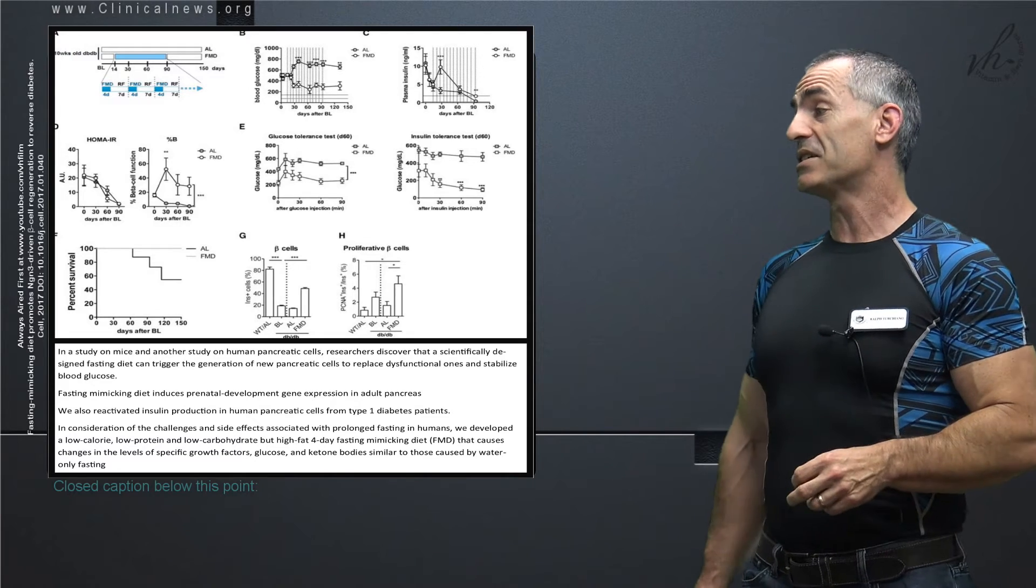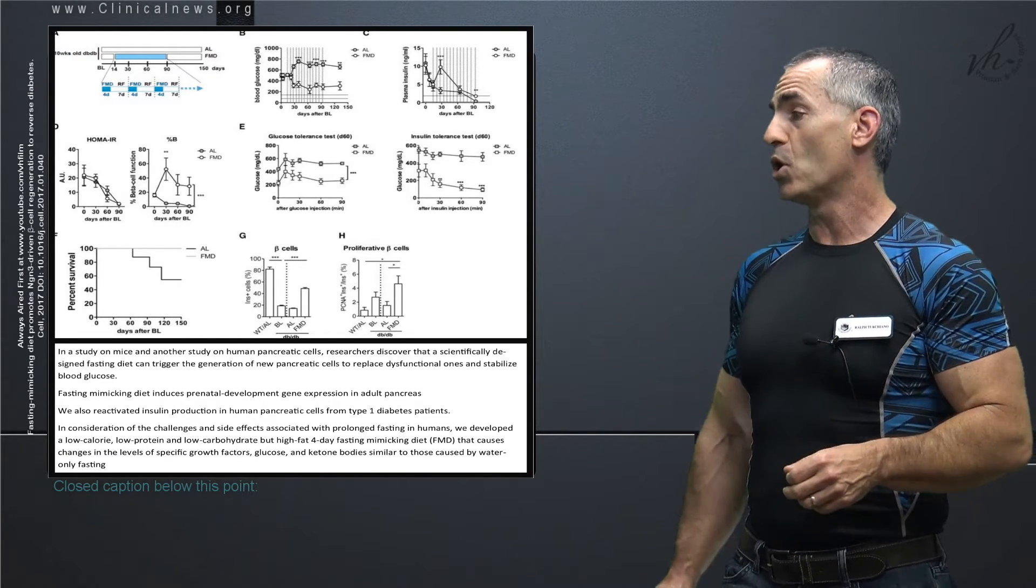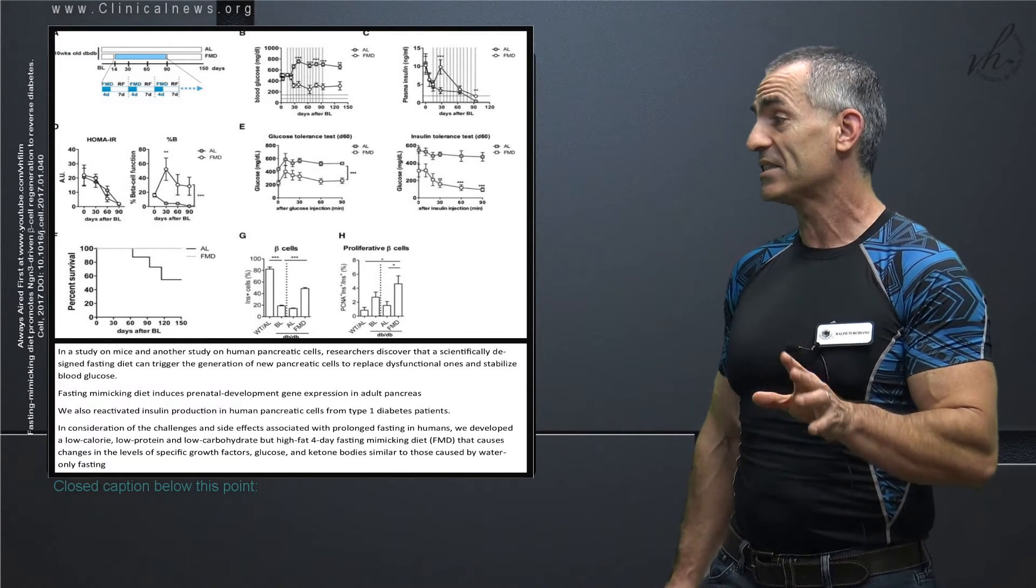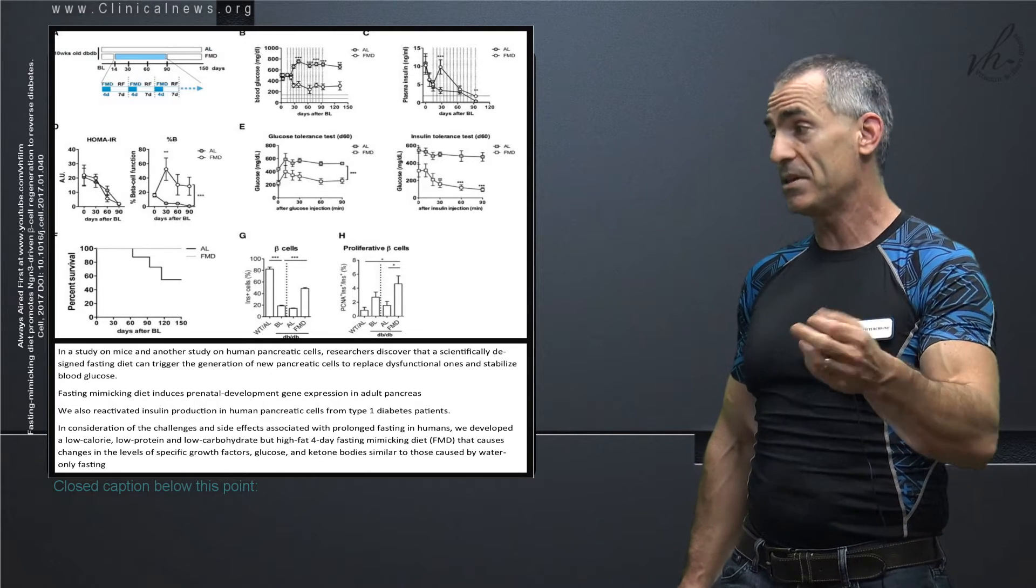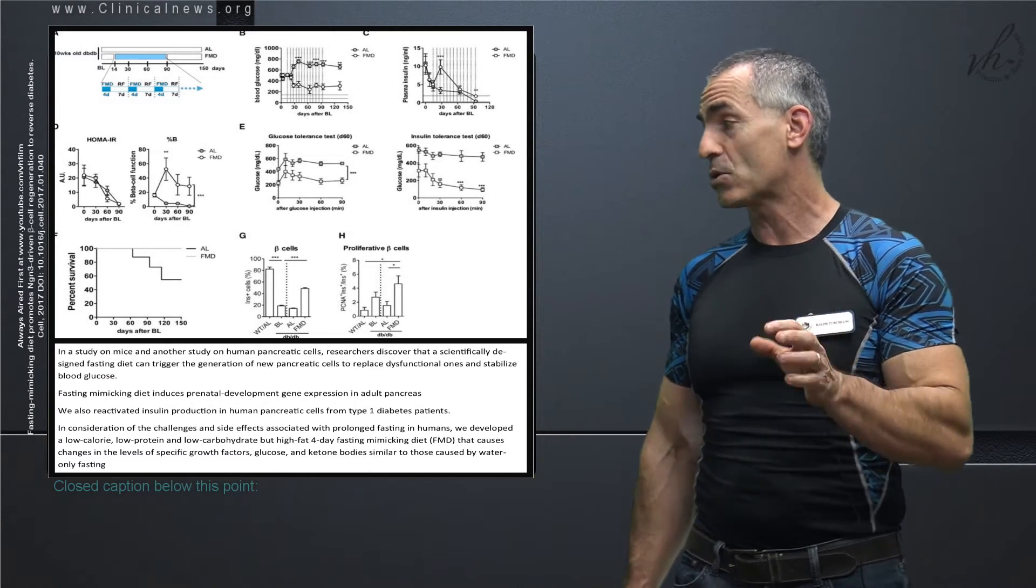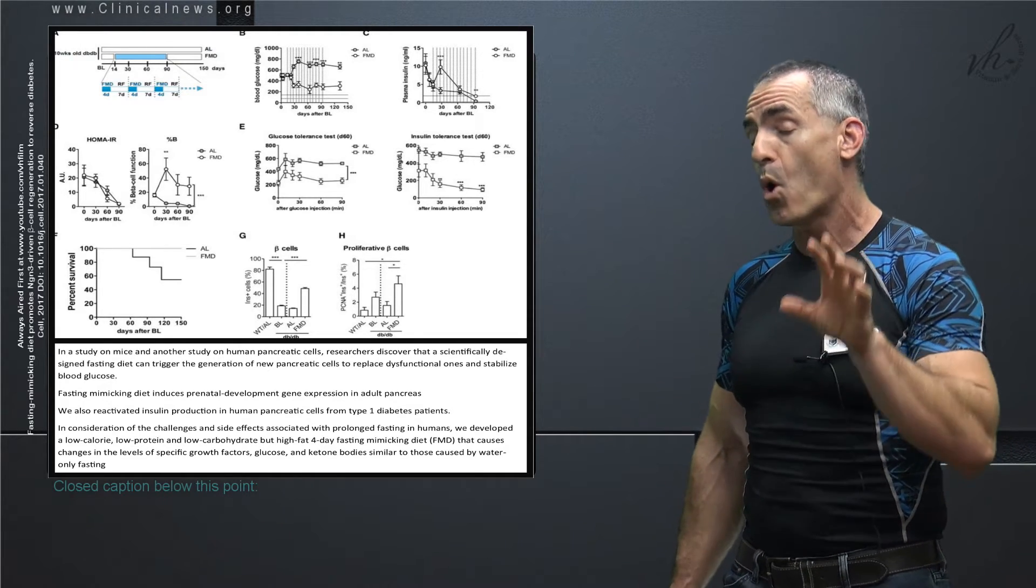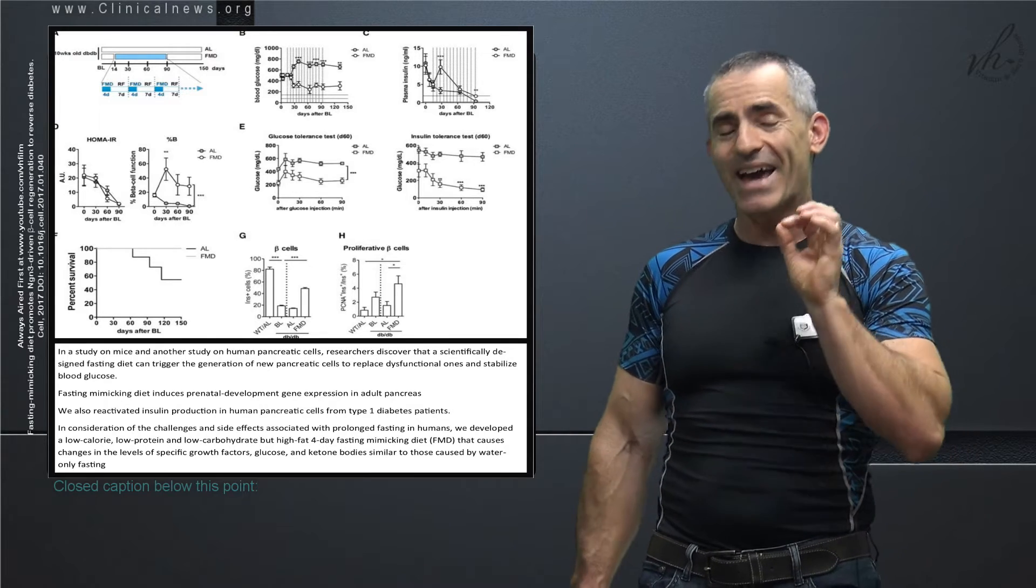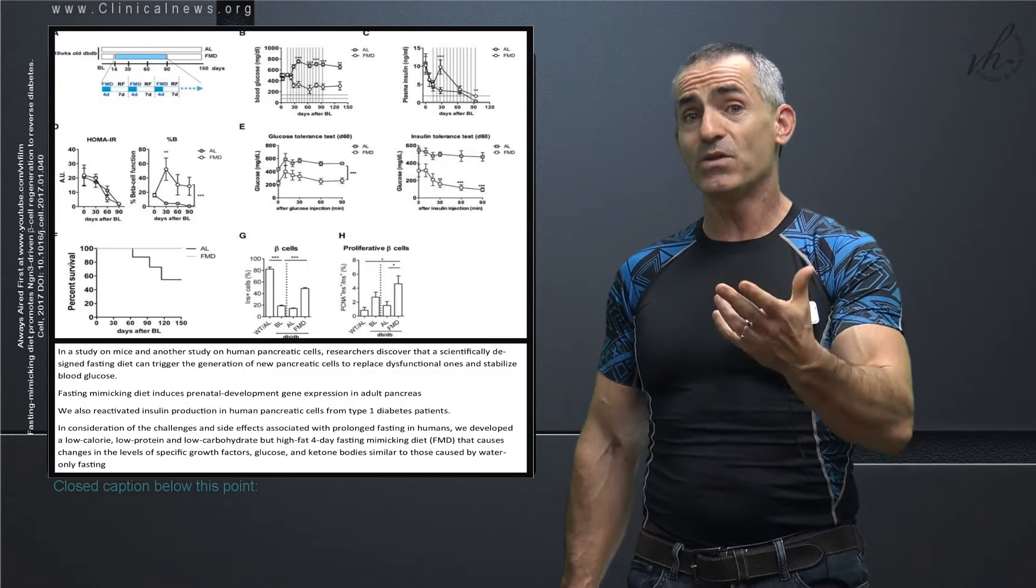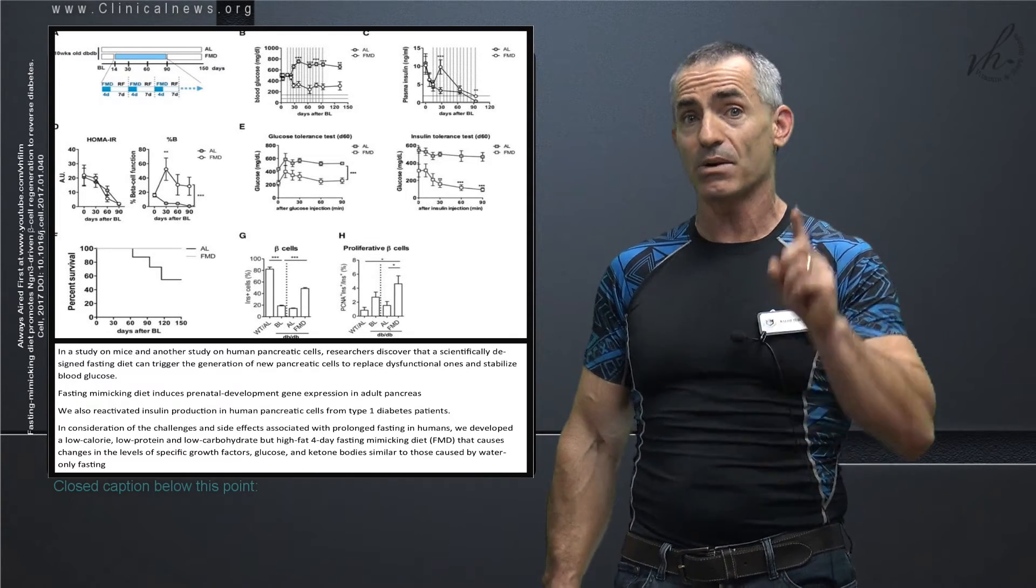In consideration of the challenges and side effects associated with prolonged fasting in humans, researchers developed a low-calorie, low-protein, low-carbohydrate, high-fat, 4-day fasting mimicking diet that causes changes in the levels of specific growth factors, glucose, and ketone bodies similar to those caused by water-only fasting. That's the really cool part that got this diet down to be very similar to the body as if you were only taking water itself, but yet you still get a chance to eat something and get some calories.